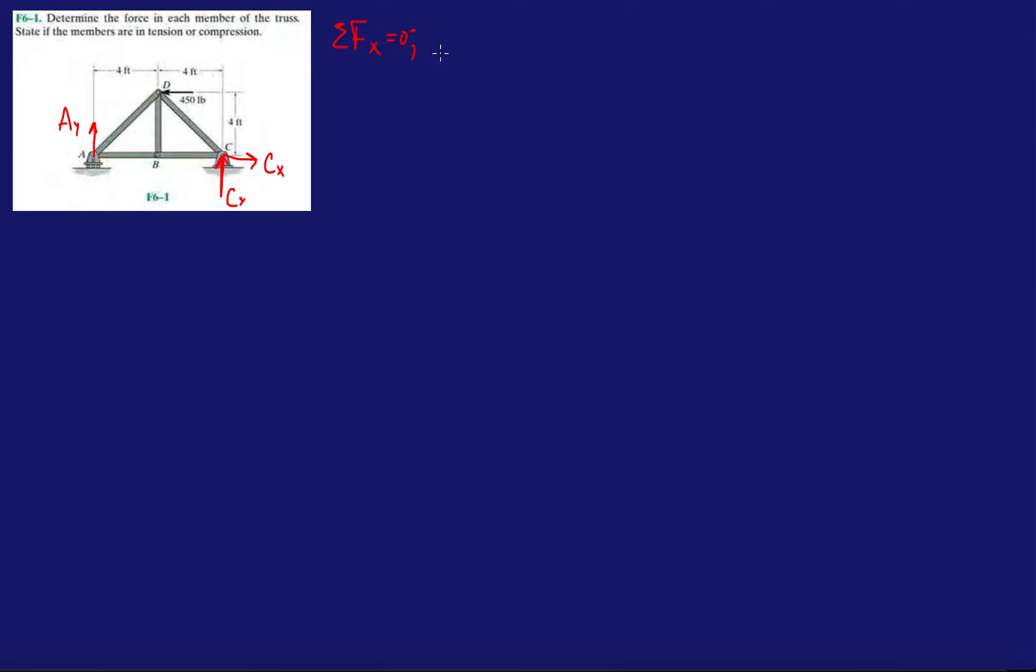And then we're going to get minus 450, because of this force right here, it's hiding out. And then we have plus CX. And this gives us CX is 450 pounds. So we have one of the reaction components. Then we will do forces in the Y direction, which is going to be AY plus CY equals zero.